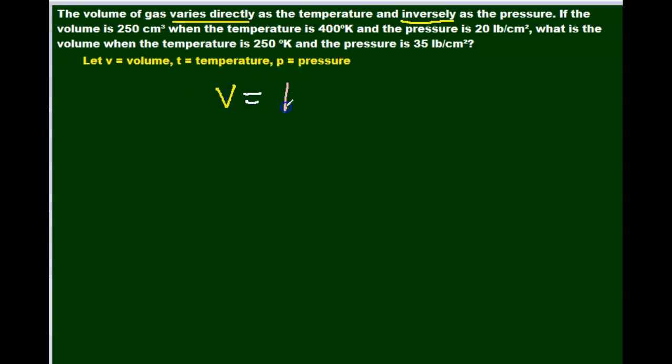Then we're going to turn our word problem into an equation. So we have volume v equals, it varies directly, so it's k times t over p because it's inversely proportional to the pressure. So in almost all cases, what we're going to find is our k first before we find our final solution. And in order to do that, we're going to plug all our given variables to find k. So here we're told that volume is 250, k is unknown, and that's what we want to find. t is 400, and p is 20.